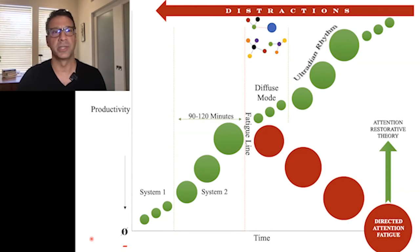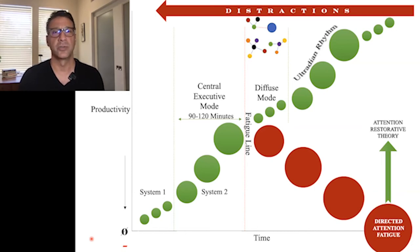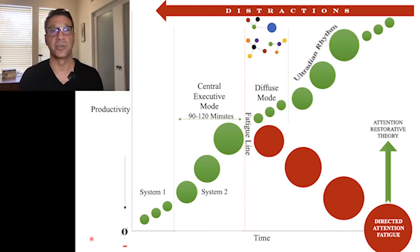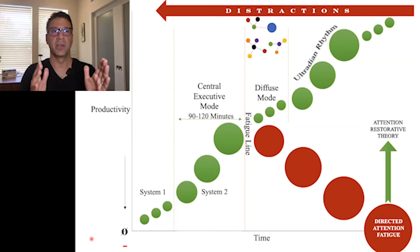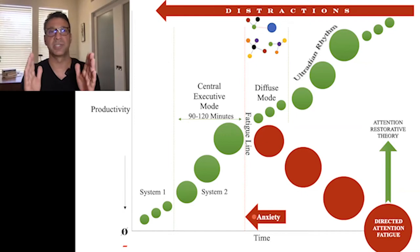This period of system two thinking can also be thought of as the central executive mode — this is where you're going to get your most efficiency and be most productive in your thinking process. Tony Schwartz from the Energy Project talks about how it varies around 90 to 120 minutes, depending on how much energy and focus you have. There's actually more variation in that, and it's really important to understand what causes that malleability of the central executive mode. One thing that can push the fatigue line to the left — decreasing the span of time you have in central executive mode — is anxiety.